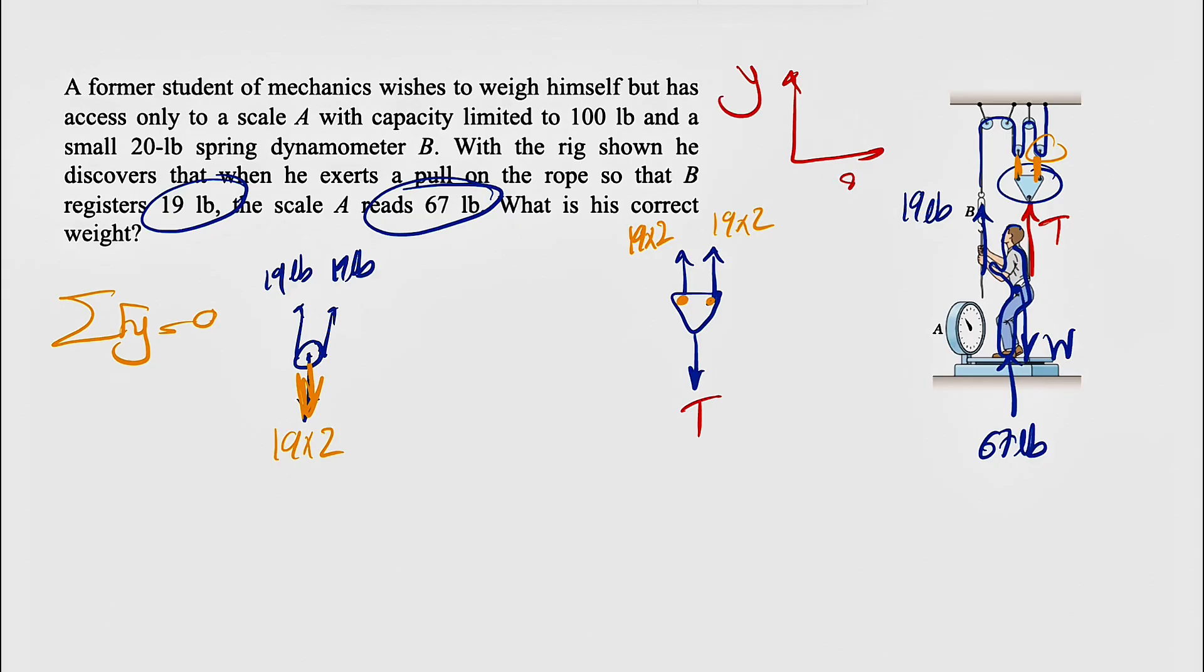all forces in y-direction equals zero since we are in equilibrium, we get 4 times 19 minus T equals zero, so T is 4 times